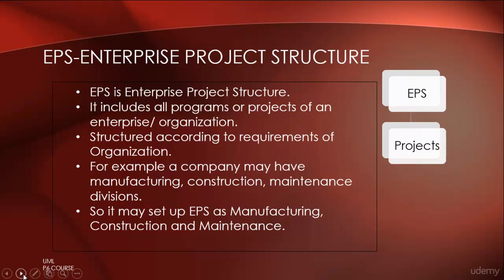EPS, or Enterprise Project Structure, includes all programs or projects of an enterprise or organization, and it's structured according to the requirements of the organization. For example, let's say we have a company with manufacturing, construction, and maintenance divisions. We may set up our Enterprise Project Structure in Primavera P6 with manufacturing, construction, and maintenance divisions. Under each EPS, we will have different projects.